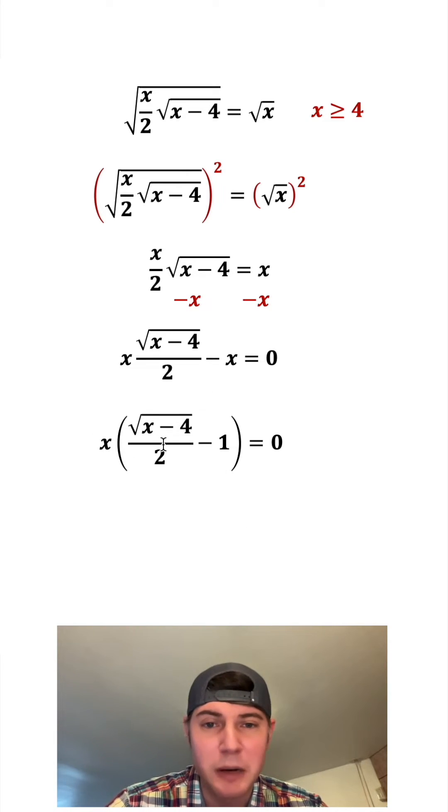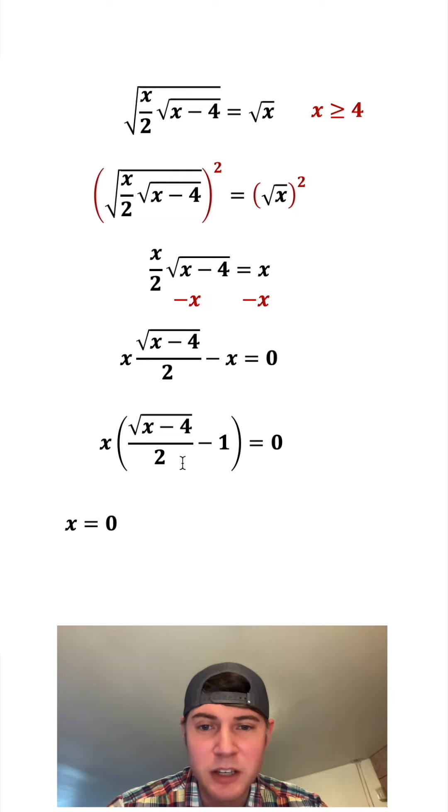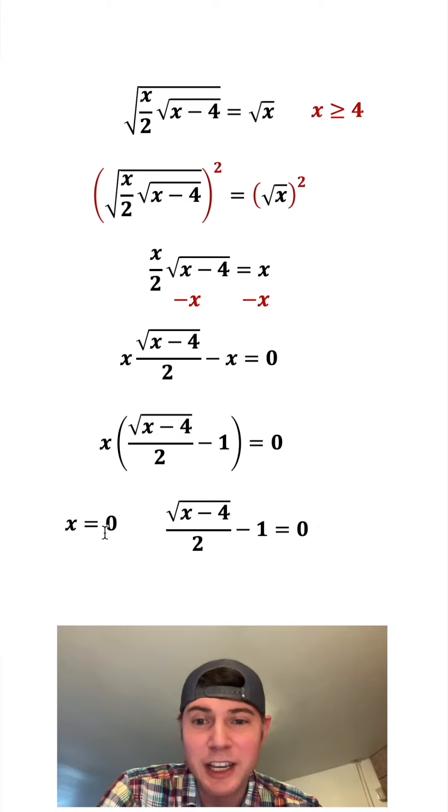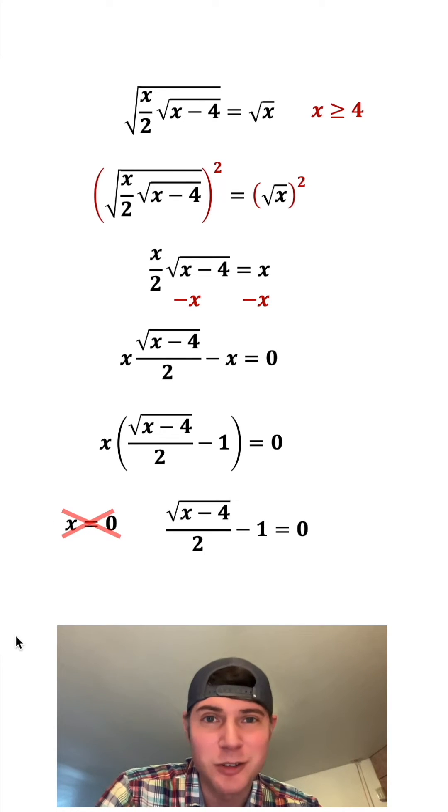From here, this x is being multiplied by all of this stuff. If either one of these two things is equal to zero, then the whole thing will be equal to zero, because zero times anything is zero. So we know our answer's gotta be either this or the solution to this. It can't be x equals zero, because that's not in our domain. If we plugged in zero, this part would be undefined. So that's not a valid solution.